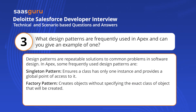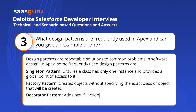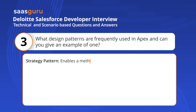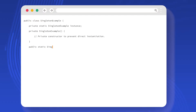The Factory pattern creates objects without specifying the exact class of object that will be created. The Decorator pattern adds new functionality to an existing object without altering its structure. The Strategy pattern enables a method to be selected at runtime.